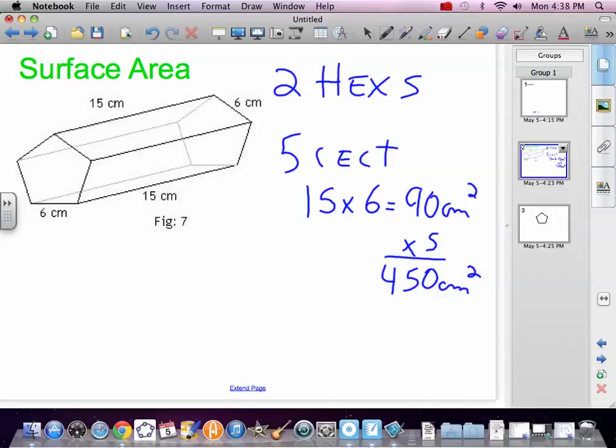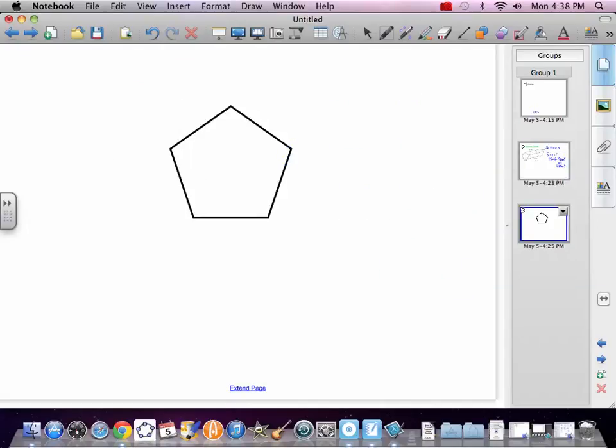Now we've got a hex. We've got to solve a hex, find the area of a hex. The easiest way, and it's nice and it's regular, is we can break it up into five equal triangles and solve the triangle.